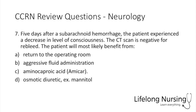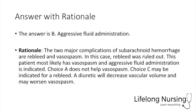Question 7. Five days after a subarachnoid hemorrhage, the patient experienced a decrease in level of consciousness. The CT scan is negative for a re-bleed. The patient would most likely benefit from: aggressive fluid administration. Two major complications of a subarachnoid hemorrhage are re-bleed and vasospasm. The re-bleed was ruled out, so the patient most likely has a vasospasm. Aggressive fluid administration is indicated. A diuretic will only decrease vascular volume and worsen a vasospasm.